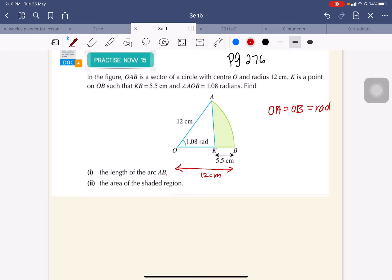Now, how to find the length of arc AB. The angle is given in radians, so you can use the formula s equals r theta, where s is the arc length, r is the radius, and theta is the angle.